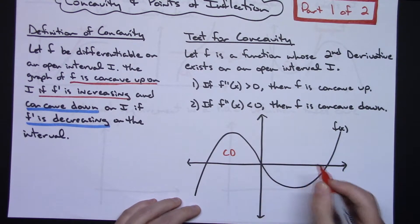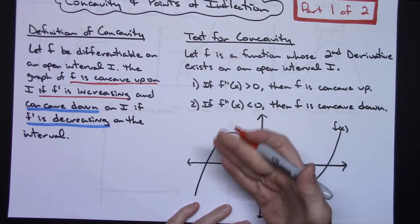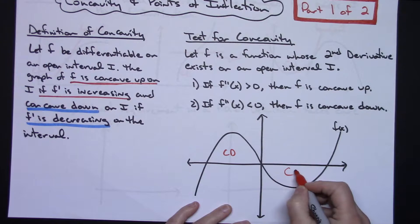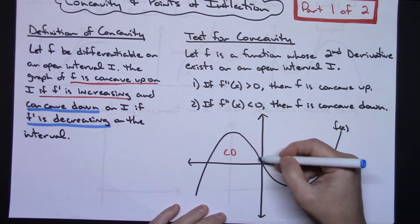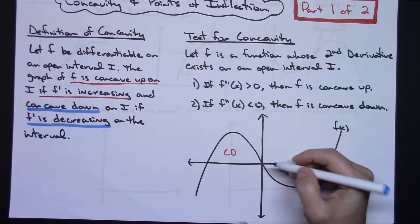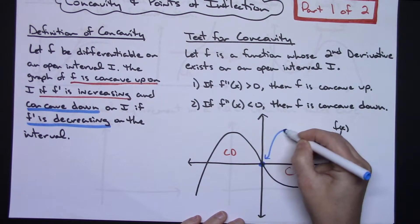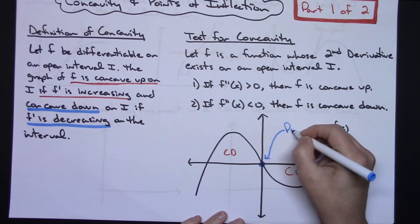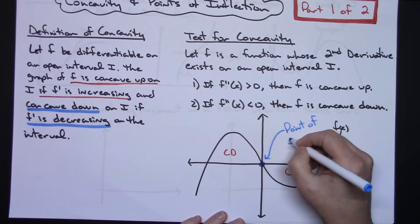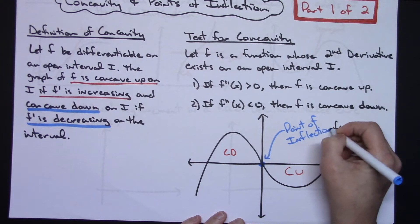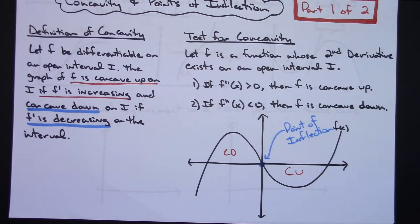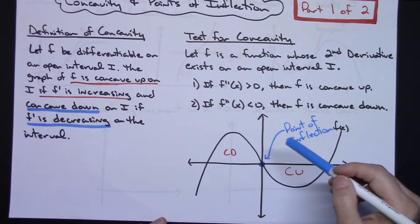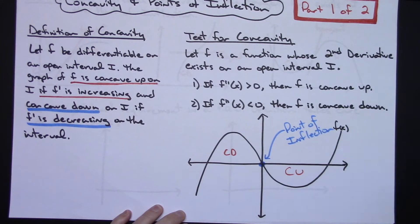And then right in here, the graph has changed directions, doing something different. Right in here, you're going to have concave up. And then the point along the curve where it actually changes from concave down to concave up, that point is called a point of inflection. So there's our point of inflection. And we can actually algebraically, and we'll do that in the second video, we can actually algebraically find that value specifically where the graph shifts from being concave down to concave up.